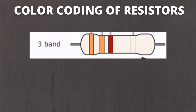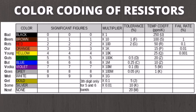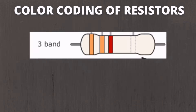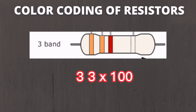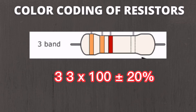Example number one is a three-band resistor. The first band color is the first significant value, the second band color is the second significant value, and the third band color is the multiplying factor. Using the chart: the first band is orange, giving us 3; the second band is also orange, giving us 3; and the last band is red, giving a multiplier of 100. Multiplying 33 by 100 gives 3300 ohms. For a three-band resistor, the tolerance is automatically 20% — no color in the chart means 20% tolerance.